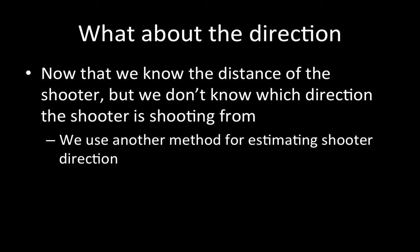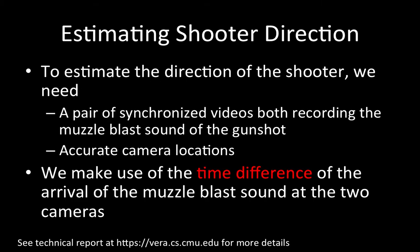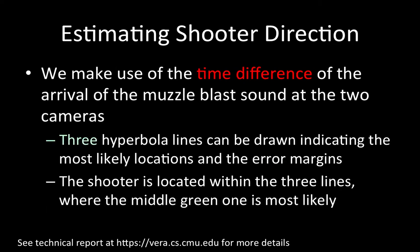We use another method for estimating shooter direction. To estimate the direction of the shooter, we need a pair of synchronized videos both recording the muzzle blast sound of the gunshot, and we also need accurate camera locations. We make use of the time difference of the arrival of the muzzle blast sound at two cameras. Three hyperbola lines can be drawn indicating the most likely locations and the error margins. The shooter is located within the three lines, where the middle green one is most likely.